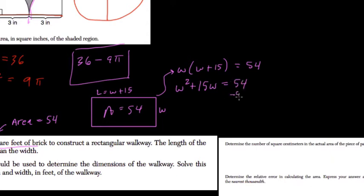Set this equal to 0. That'll make your life easier. So subtract 54 on both sides. So w squared plus 15w minus 54 equals 54 minus 54. That's 0.